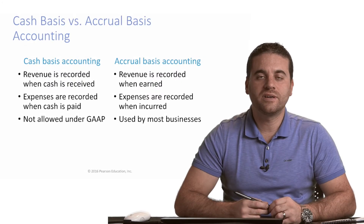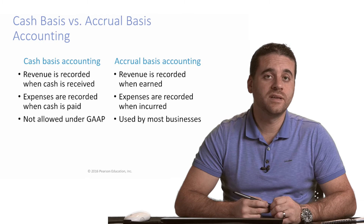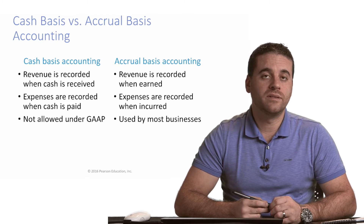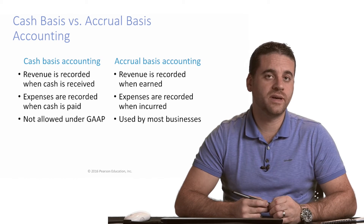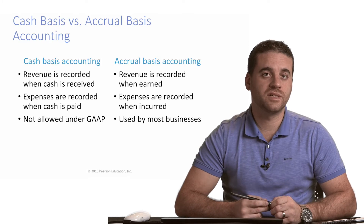Hello, everyone. We're starting Chapter 3, which talks about adjusting entries. In Chapter 3 videos, we'll talk about why we have to do adjustments, what's the purpose for that, and then we'll see how the journal entries for adjustments will look like.